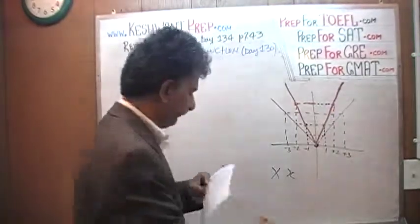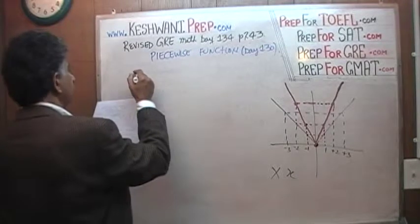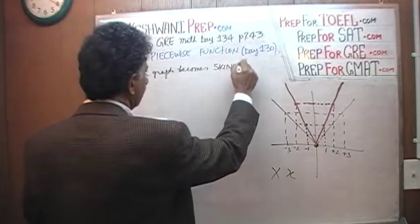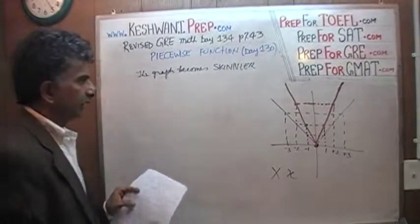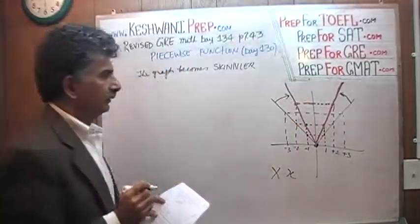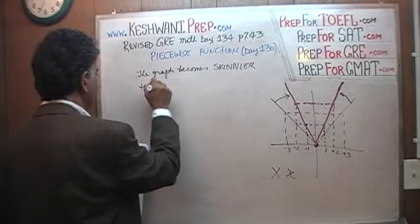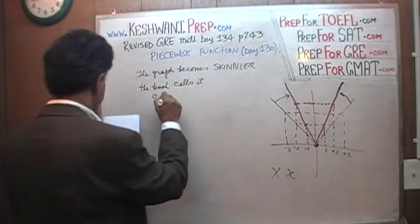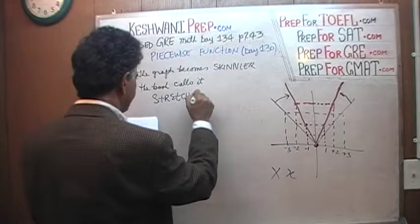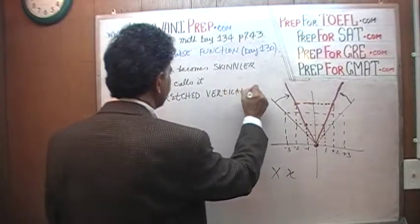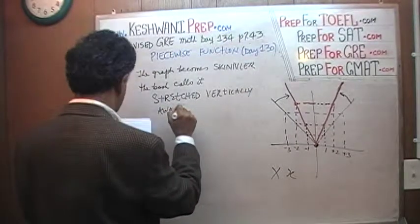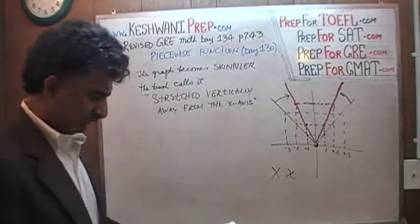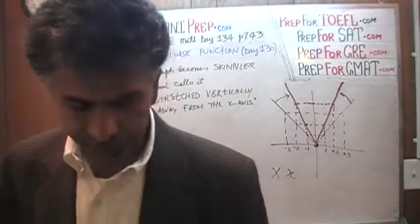Here the graph becomes skinnier — before it was very fat, now it is skinny. The book calls it: stretched vertically away from the x-axis. I wonder who comes up with these things. Stretched vertically away from the x-axis — that is how they put it.